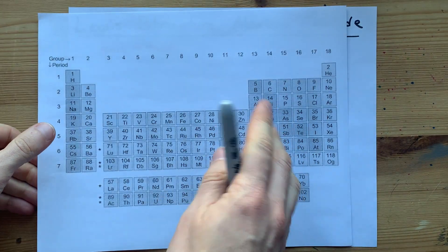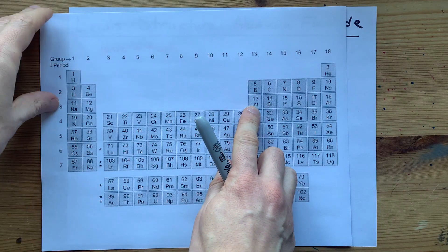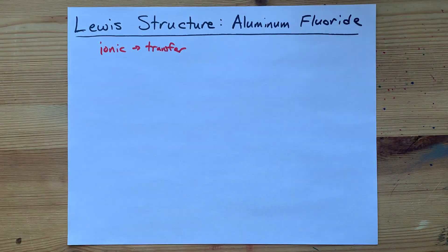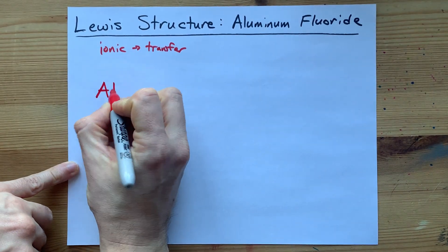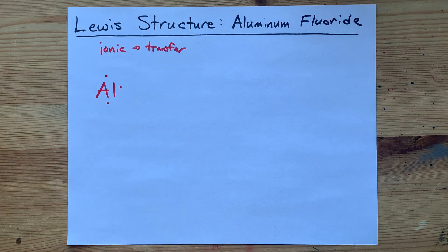In order to draw this, you'll need to know how many valence electrons are in each of those atoms. Aluminum is in group 13, so it brings three valence electrons with it. I'll draw my Al: one, two, three electrons in its outer shell.